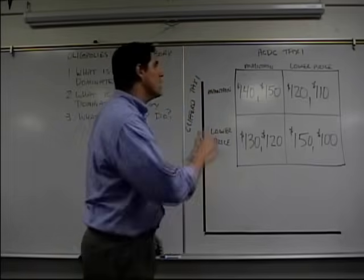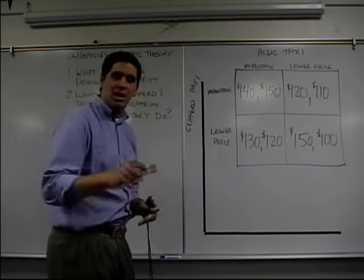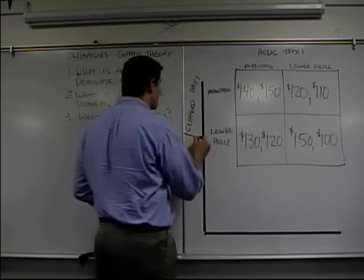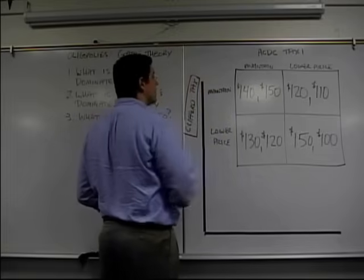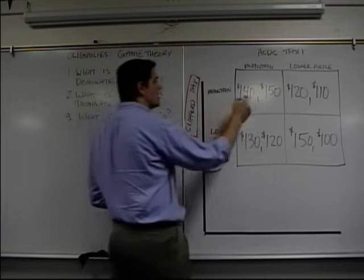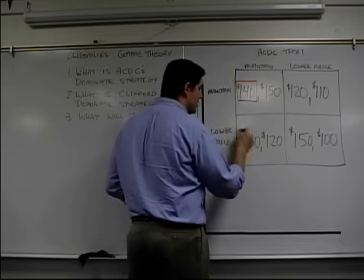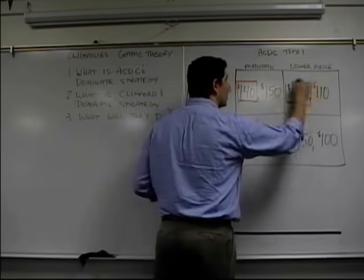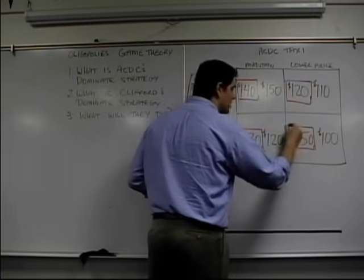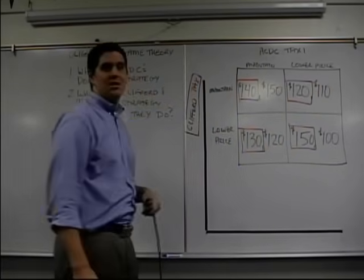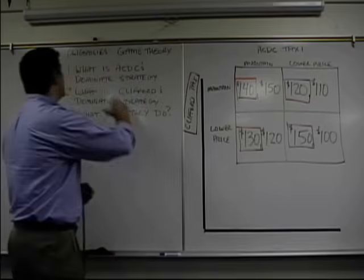Here we go. A lot of students have a hard time with this. I'm going to give you a trick. Here's the trick. What I want you to do is put a box around Clifford Taxi, which is the ones on the left-hand side. So if you put a box around these, this is going to help you remember that if you're looking for Clifford Taxi, you're looking at the box numbers. The numbers that don't have the box are obviously ACDC Taxi. Let's go to these questions. Good.